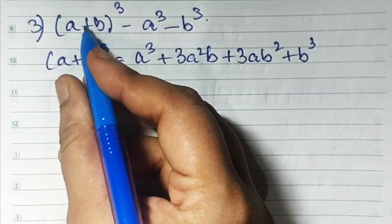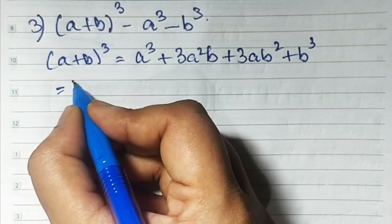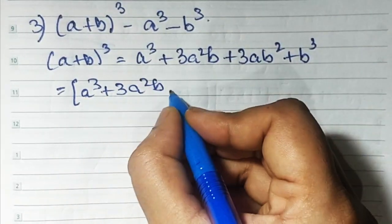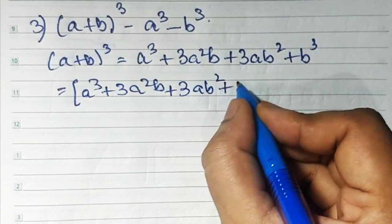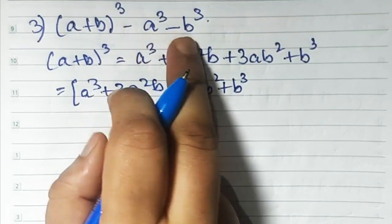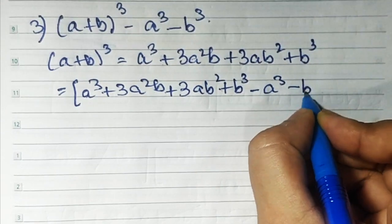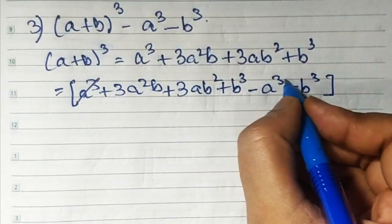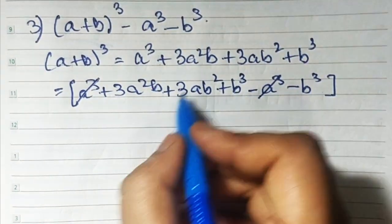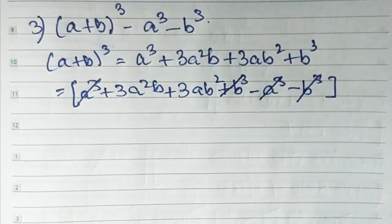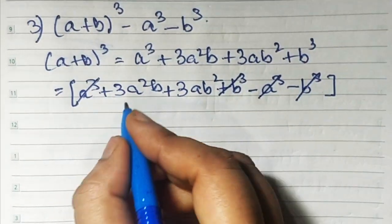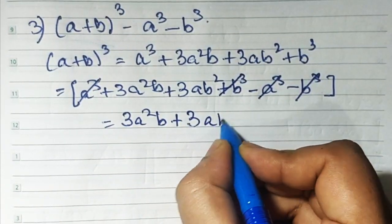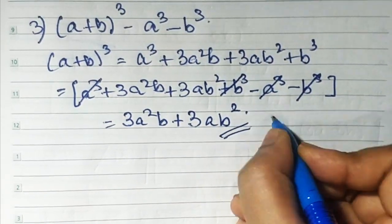Substituting: (a + b)³ = a cube plus 3a square b plus 3ab square plus b cube, then minus a cube minus b cube. Plus a cube and minus a cube cancel, and plus b cube minus b cube cancel. What remains is 3a²b + 3ab², which is your answer.